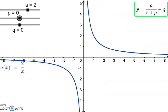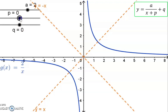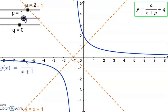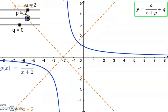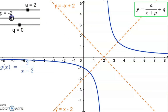A hyperbola has two axes of symmetry. One is at the line y equals x, and the other is the line y equals minus x for a hyperbola with no translations. When we add a p value to the function, these two axes of symmetry move along with the graph — in the negative direction for a positive p value, or in the positive direction for a negative p value.